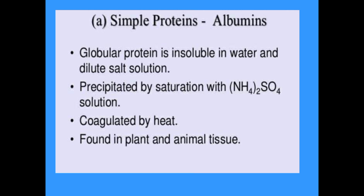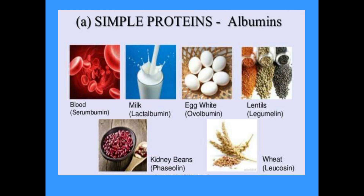Simple proteins — the first type is albumins. Albumin is a globular protein insoluble in water and dilute salt solutions; it is precipitated by saturation with ammonium sulfate and coagulates when heated. Found in plant and animal tissues, examples include blood serum albumin, milk lactalbumin, egg white ovalbumin, lentil legumelin, kidney bean fazolin, and wheat leucosin.